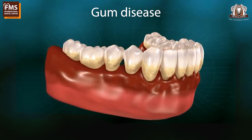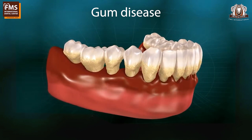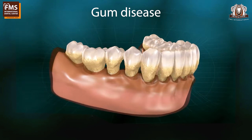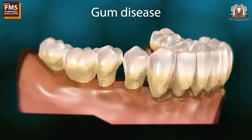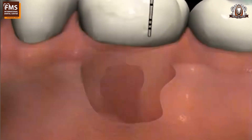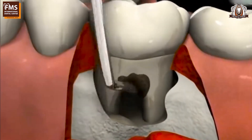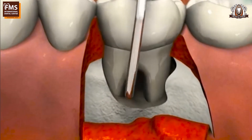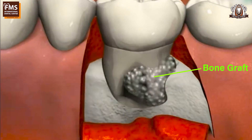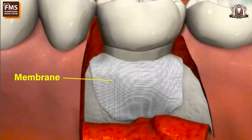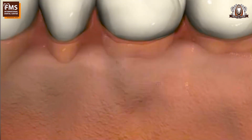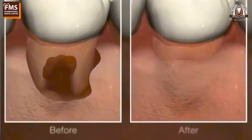When gum disease affects the bones around your teeth, breakdown of these supporting structures will happen and one is diagnosed with having periodontal disease. In such cases, your periodontist will advise gum surgery with use of many additives which can help to grow bone or regenerate the lost bone. One such technique employed here is known as Guided Tissue Regeneration or GTR.